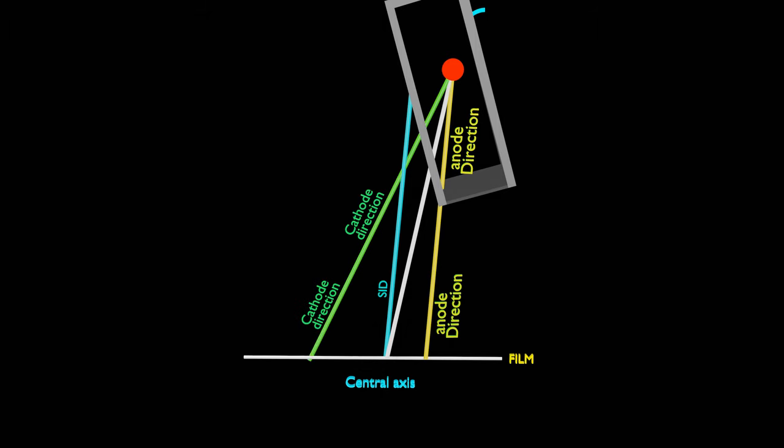You can observe, the distance from x-ray source to film is not the same at all points in anode-cathode direction. The distance in anode direction is less than central axis. And distance in cathode direction is more than central axis. That means, x-rays need to travel longer distance to reach cathode side than anode side at the film level.